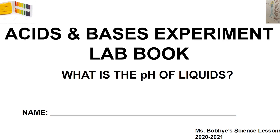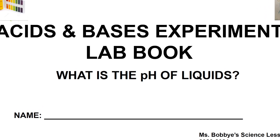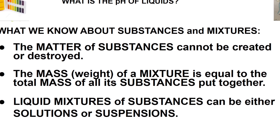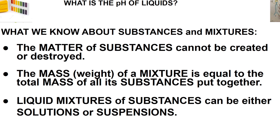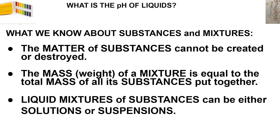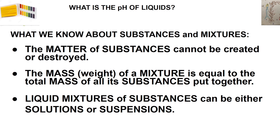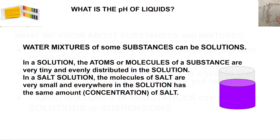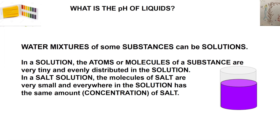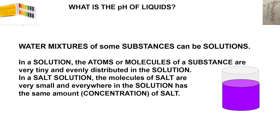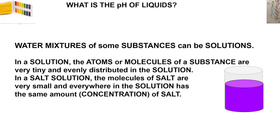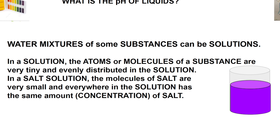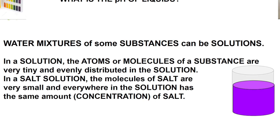Scientists and engineers, this is what your lab book for the acids and bases experiment looks like. Let's remember what we know about substances and mixtures. The matter of substances cannot be created or destroyed. The mass or weight of a mixture is equal to the total mass of all of its substances put together. Liquid mixtures of substances can either be solutions or suspensions. We also know that water mixtures of some substances can be solutions. In a solution, the atoms or molecules of a substance are very tiny and evenly distributed. For example, in a salt solution, the molecules of the salt are very small and everywhere in the solution is the same amount of salt, or concentration.